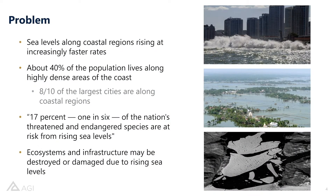The problem being faced around the world today is that sea levels along coastal regions are rising at increasingly faster rates each year. About 40 percent of the population lives along these highly dense coastal areas, and 8 out of 10 of the largest cities are along these coastal regions. 17 percent, or one in six, of the nation's threatened and endangered species are at risk from rising sea levels. Ecosystems and infrastructure can also be damaged, displaced, or destroyed due to rising sea levels.